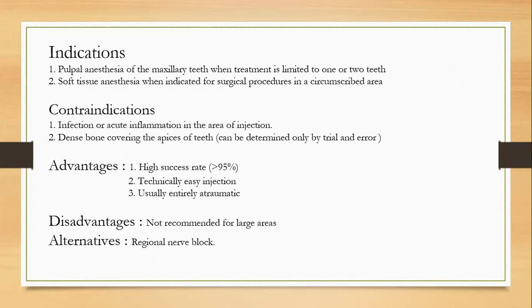Disadvantages: it is not recommended for larger areas. For extractions of mobile teeth it can work, but for molars like the first or third molar it will not be effective, and the alternative will be regional nerve blocks. The technique uses a 27-gauge short needle. The area of insertion is the height of the mucobuccal fold, with the syringe held parallel to the long axis of the tooth, inserted at the height of the mucobuccal fold over the tooth.